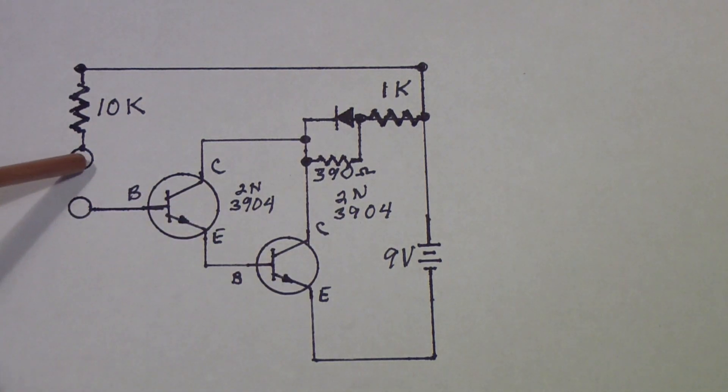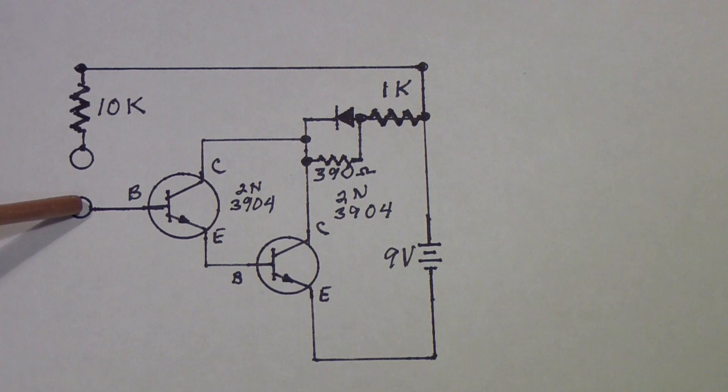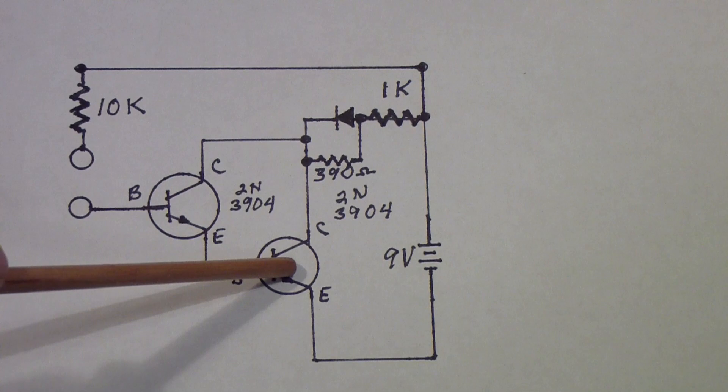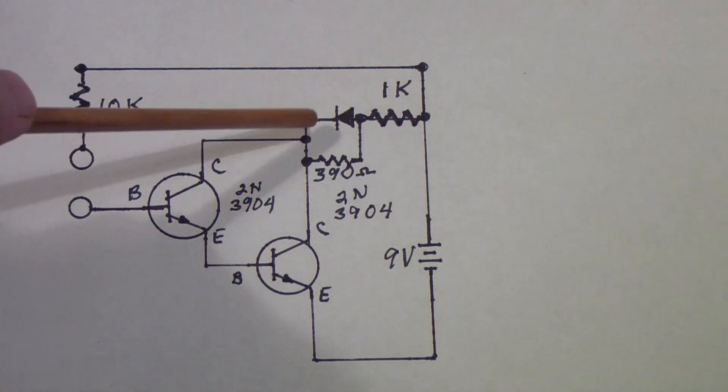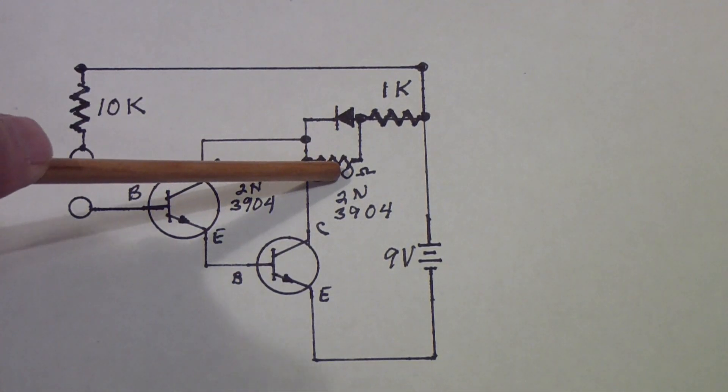And as a result if there is virtually any resistance here, in other words if it's anything other than a complete open circuit, there will be some conduction through this Darlington pair. Depending on where you have this resistor set...